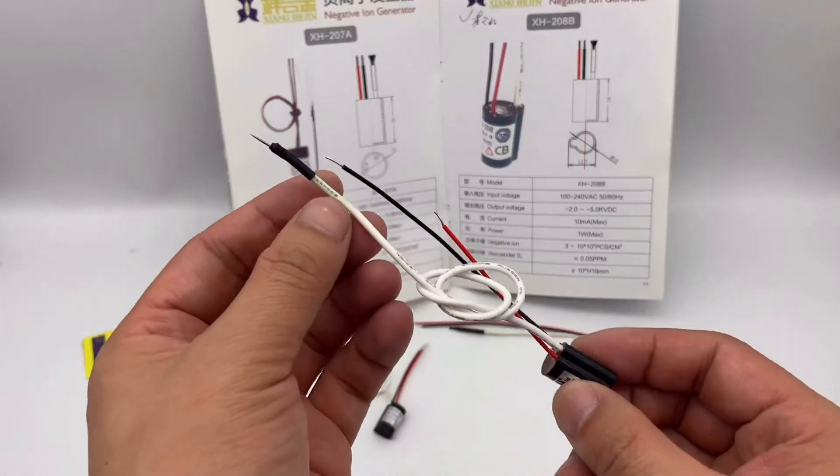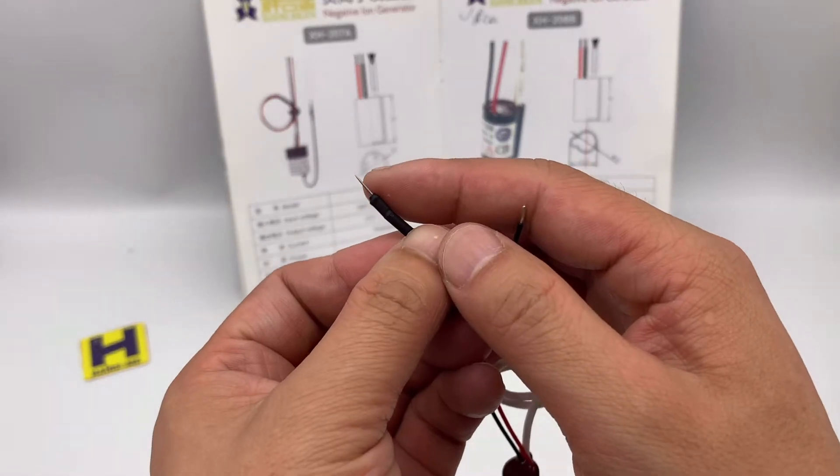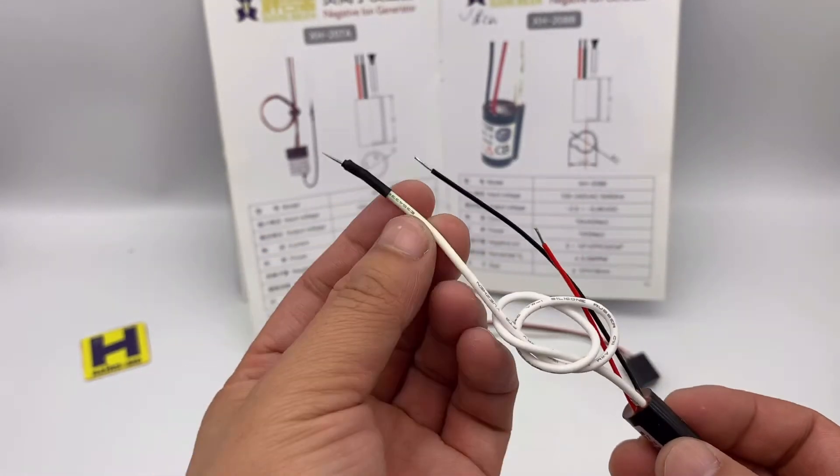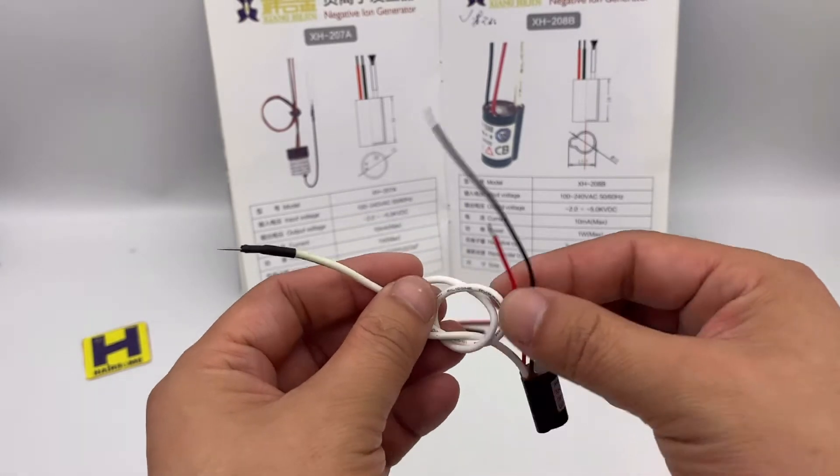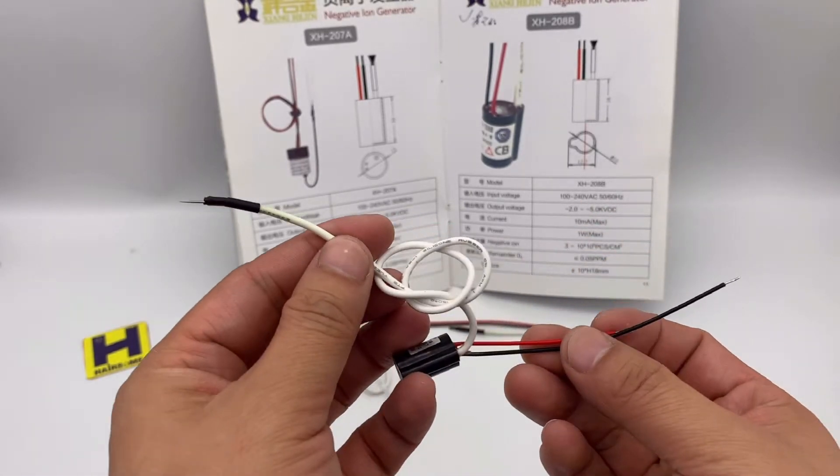Also this one, this is a very sharp pin. This also can produce the ion.